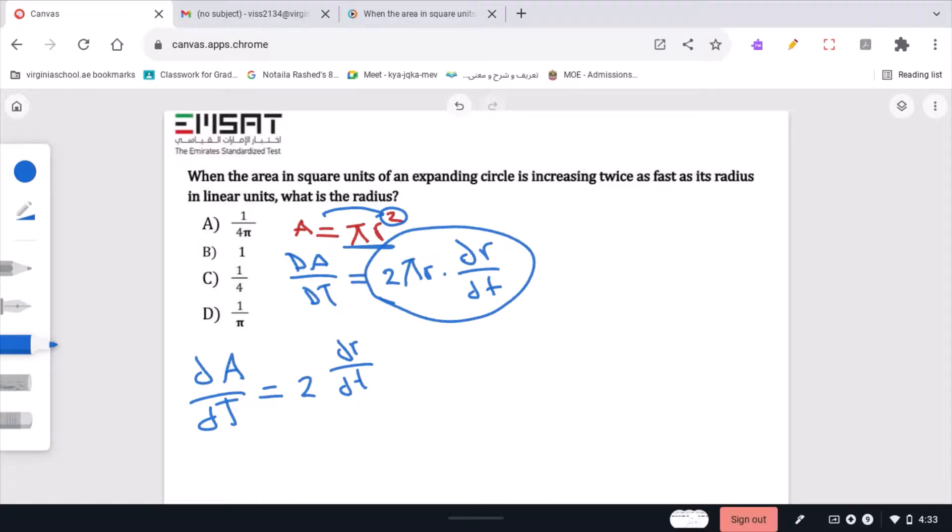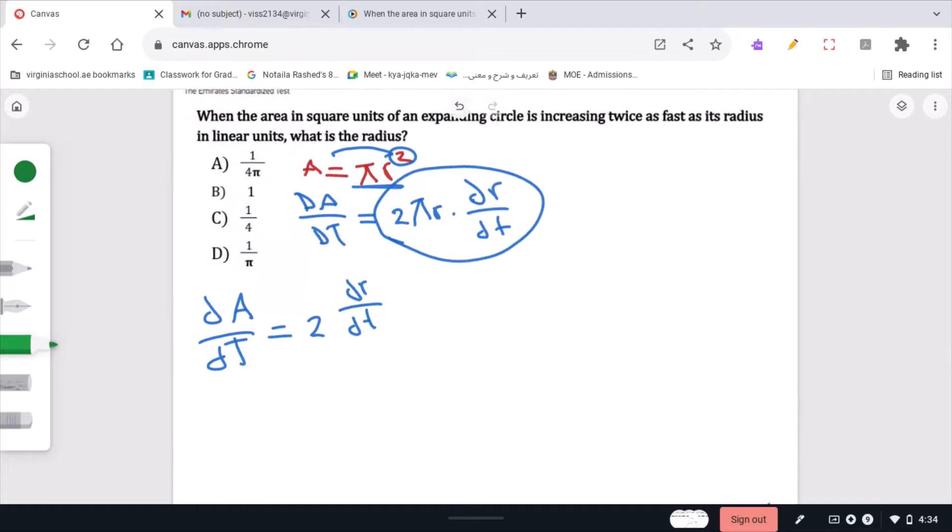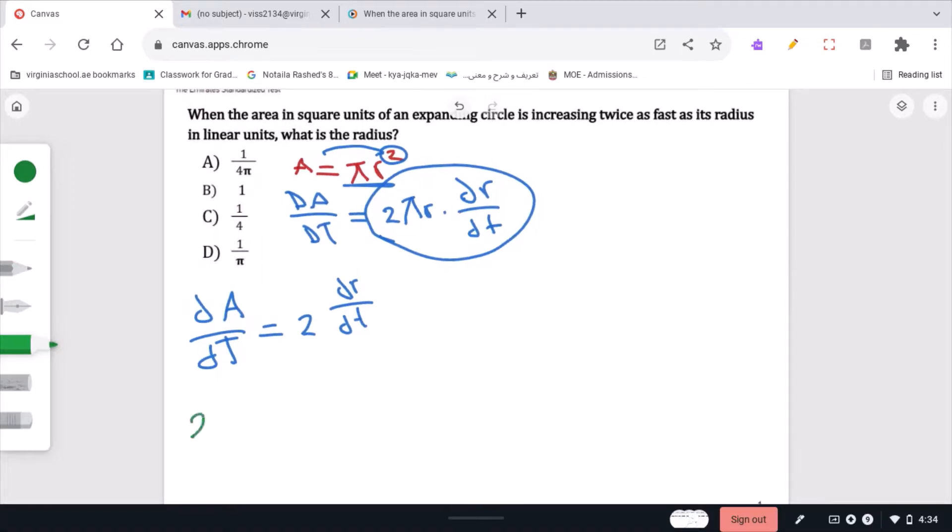Therefore you can set 2 dr/dt equal to 2 pi r dr/dt.